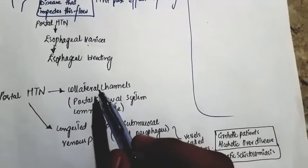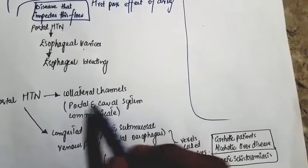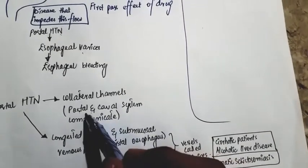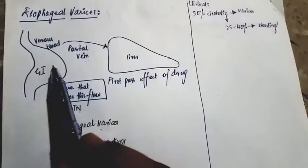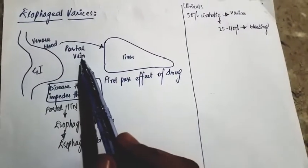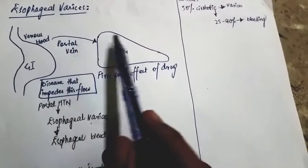This portal hypertension will form collateral channels between the portal and caval system where the portal and caval system communicate. GI blood is passed through to the liver by the portal vein.